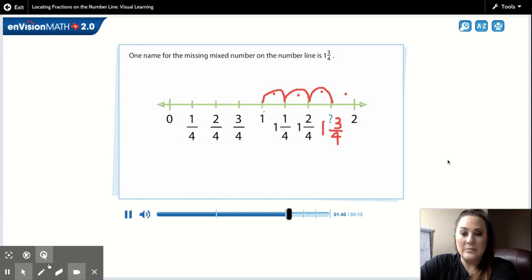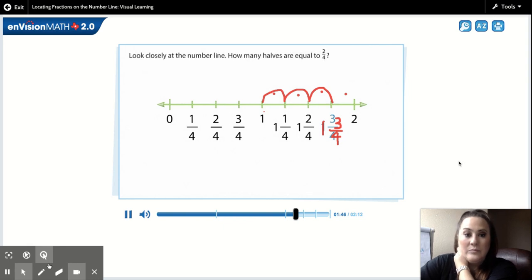One name for the missing mixed number on the number line is one and three-fourths. Look closely at the number line. How many halves are equal to two-fourths? Okay, two-fourths. This is confusing because you may have seen it written a different way. But two-fourths is equal to one-half. One-half is equal to two-fourths.